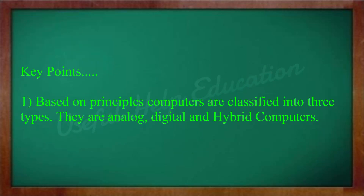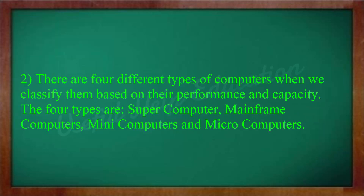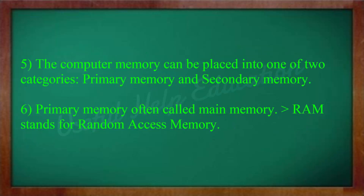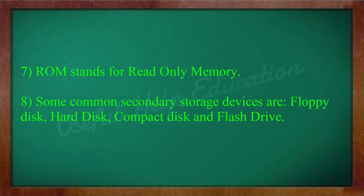Key points: Based on principles, computers are classified into three types: analog, digital and hybrid computers. There are four types based on performance and capacity: supercomputer, mainframe computers, mini computers and microcomputers. The most commonly used input devices are keyboard, mouse, touchpad, joysticks, touchscreen, graphics tablet, scanner and light pen. CPU has three parts: ALU (Arithmetic and Logical Unit), CU (Control Unit), and MU (Memory Unit). Computer memory falls into two categories: primary memory and secondary memory. RAM stands for Random Access Memory and ROM stands for Read-Only Memory. Common secondary storage devices are floppy disk, hard disk, compact disk and flash drive.